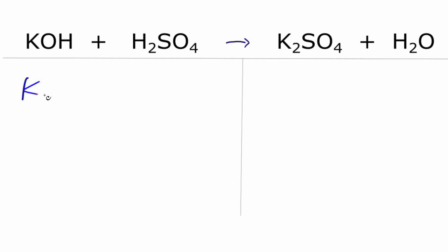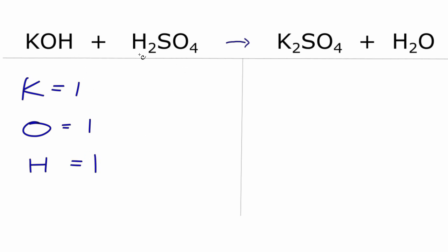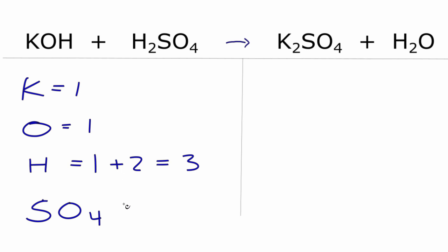On the reactant side, I have potassium — one of those. Oxygens — I have one oxygen here, and I'm ignoring these for right now. Hydrogens — I have one hydrogen plus the two in the H₂, so I have three hydrogens. And then I'm just going to call SO4 its own thing, and I have one of those.